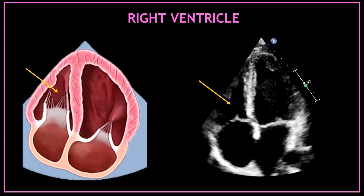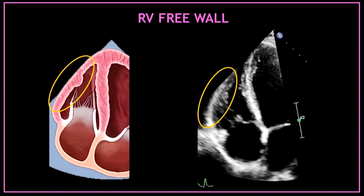The next chamber we can see in this view, at the top of the screen on the left hand side, is the right ventricle. The right ventricle is formed by the interventricular septum on the right hand side and also by the right ventricular free wall on the left hand side.